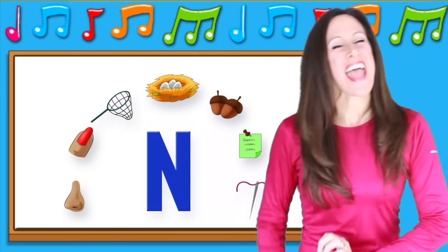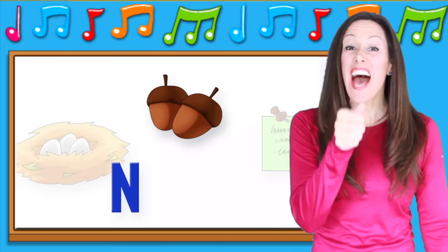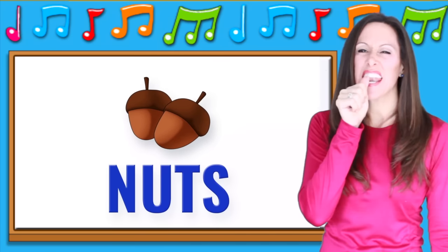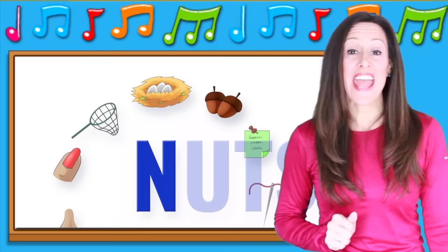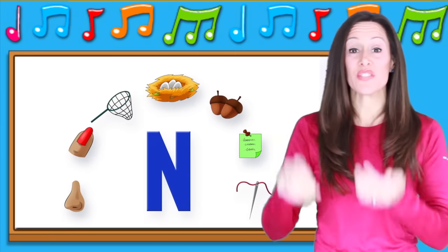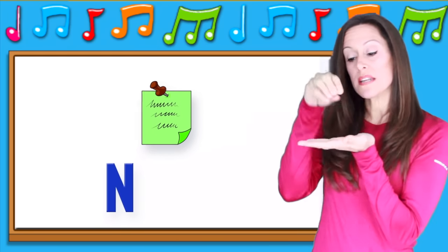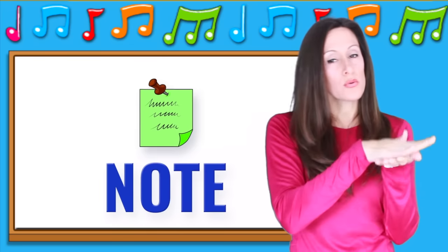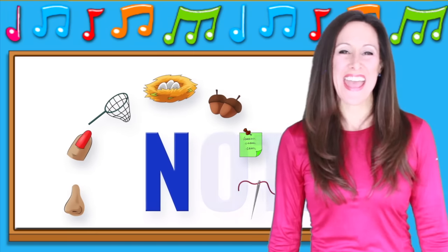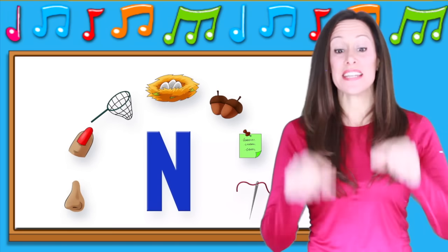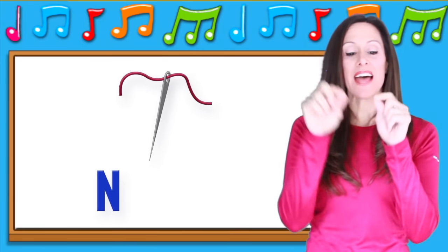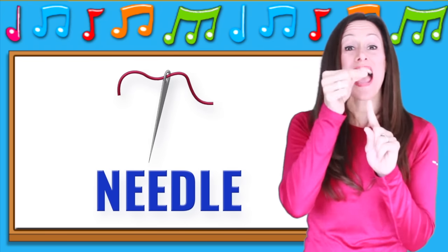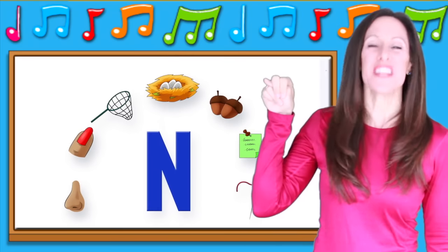N is for n-n-knots, n-n-knots, n-n-knots. N is for n-n-note, n-n-note. N is for n-needle, n-needle, n-needle. N is for N.